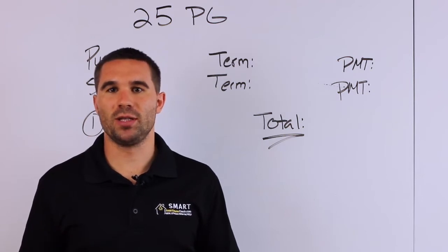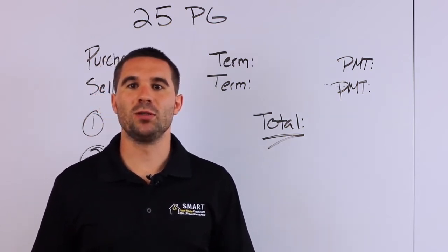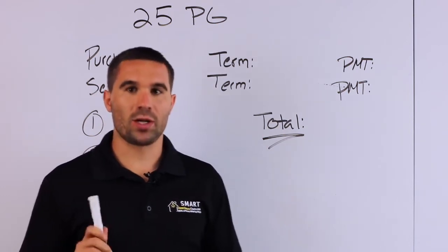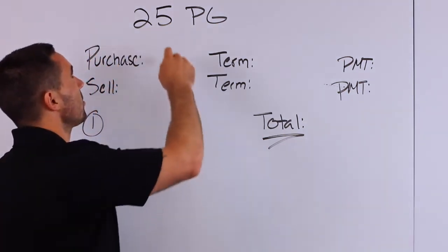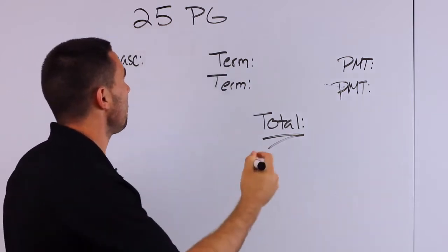But again, just don't give up on the deals, especially if a seller is going to give you that ability to do so. Okay. So we're going to call this deal structure 25 PG, and this is a lease purchase.